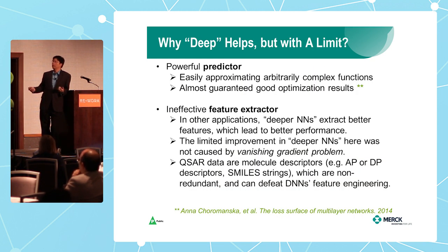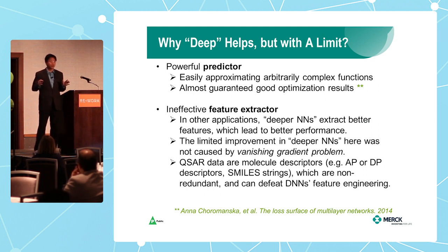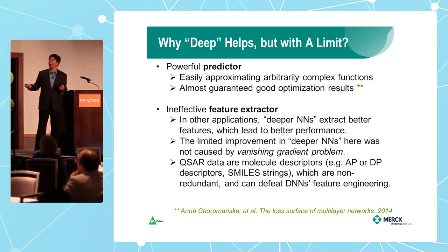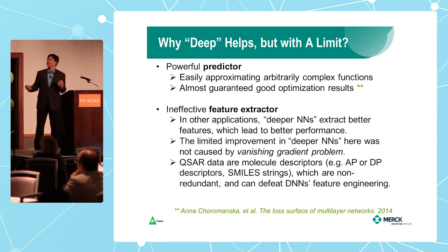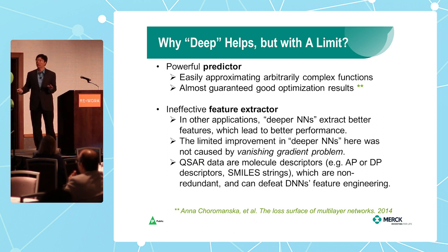Generally speaking, the good part is that deep neural nets are very powerful predictors and classifiers. The theory says: although you have a deeper network with many local minima, once your network is big enough almost all the local minima are good. The limitation part: in a lot of other applications depth is good because of extracted direct features. We checked and confirmed the deeper doesn't go better here — not because of the vanishing gradient problem, but because they don't really extract features well.